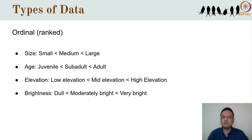This now changes with ordinal data, where the different states can be ranked with respect to each other. Examples include the categories of size like small, medium and large, or categories of age like juvenile, sub-adult and adult. Here we can actually order the states by the attribute of interest, and can say that adults are older than sub-adults, which in turn are older than juveniles.